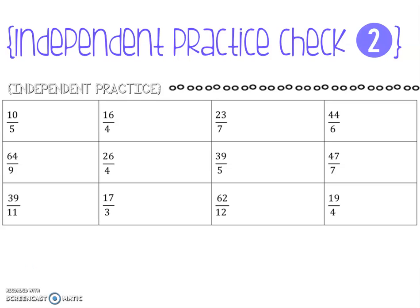All right, so what we're gonna do is check independent practice section number two, where we're turning improper fractions into mixed numbers. We're gonna start with 10 fifths and just work our way across the row.